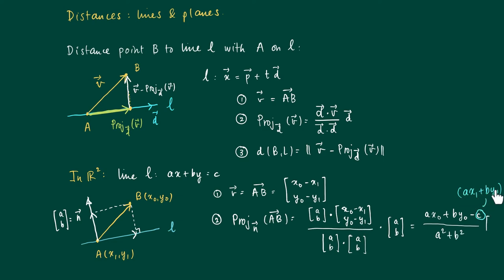But A X one plus B Y one—since A is a point on the line, it satisfies the condition of the line, so this equals C. So we get here the projected vector AB on N.